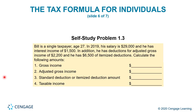Here we have a self-study problem. Bill is a single taxpayer, age 27, in 2019. His salary is $29,000 and he has interest income of $1,500. In addition, he has deductions for adjusted gross income of $2,200 and he has $6,500 of itemized deductions. Calculate his gross income, his adjusted gross income, the standard deduction or the itemized deduction, and then his taxable income.